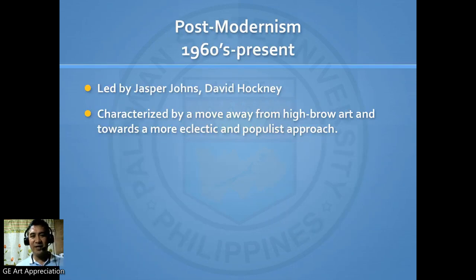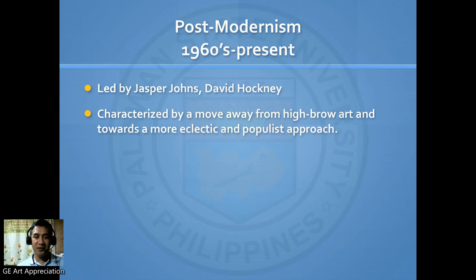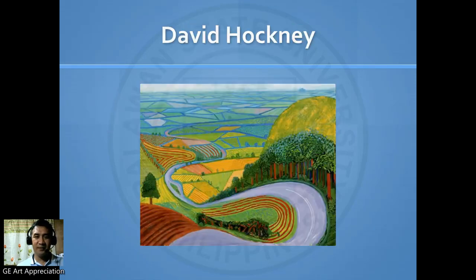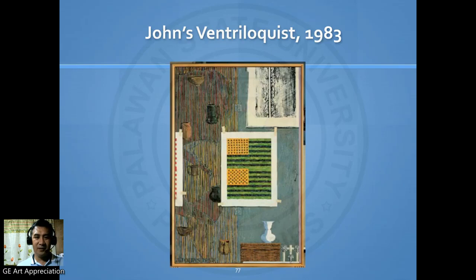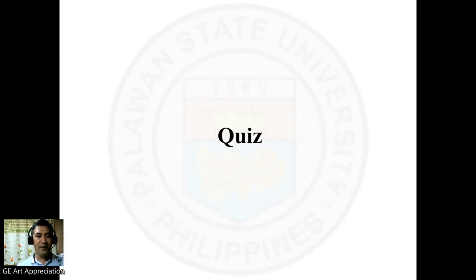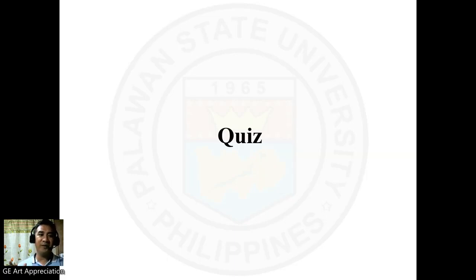We have Post-Modernism during the 1960s to the present, led by Jasper Johns and David Hockney. It is characterized by a move away from highbrow art and towards a more eclectic and populist approach. So those are the viewpoints in different time periods in the Western view — how they viewed beauty and art.